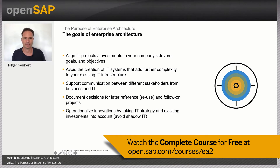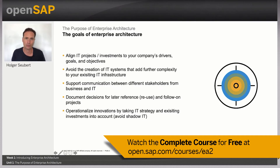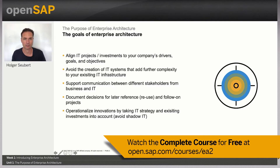Let's quickly summarize the goals of enterprise architecture. First, enterprise architecture helps to align IT investments to your company's business goals by taking a holistic view at both business and IT domains. Second, EA helps to manage the complexity of your IT landscape by utilizing synergies and executing on an aligned strategy. Third, EA supports communication between business and IT by defining a common vocabulary that can be understood by both sides.